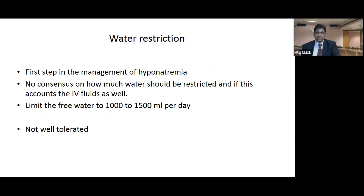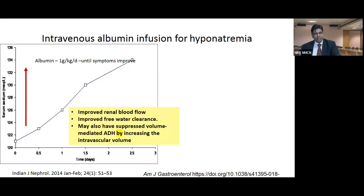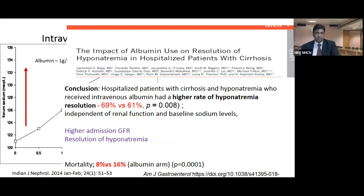Water restriction is poorly tolerated. Intravenous albumin for hyponatremia improves serum sodium by improving renal blood flow and free water clearance. It may also suppress volume-mediated ADH by increasing intravascular volume. A recent study from the Jasmohan Bajaj group concluded that hospitalized cirrhotic patients with hyponatremia who received albumin had higher rates of hyponatremia resolution — 69 versus 61 percent — but mortality in the albumin group was significantly higher.